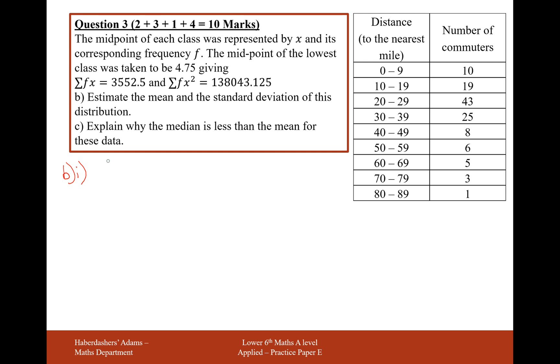Let's work on the mean first. The formula here is the sum of f times x over the sum of f. The sum of fx here is 3552.5. And the sum of f is the sum of all the frequencies. And we already know here we've got 120 people in our sample. So in this case, we're going to get 29.6 miles. This is the mean.